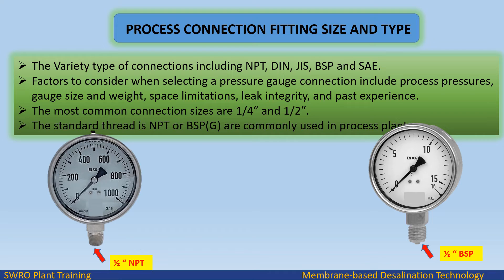Process connection fitting size and type: A variety of connection types are available, including NPT, DIN, JIS, BSP, and NSA. Factors to consider when selecting a connection include process pressures, gauge size and weight, space limitations, leak integrity, and past experience. The most common connection sizes are quarter inch and half inch. The standard thread types NPT or BSP (G) are commonly used in process plants.